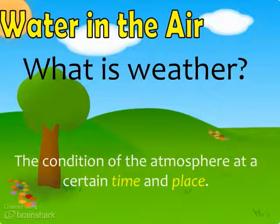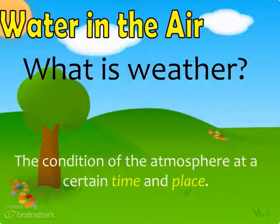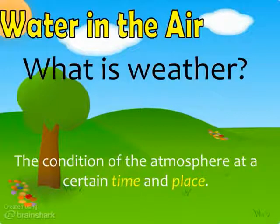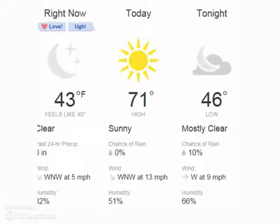What is weather? The definition we're going to use says that weather is the condition of the atmosphere at a certain time and place. Time and place are italicized because when we're talking about weather, we are indicating that it really all depends on the time of day and the place that you're talking about, which tells us that weather changes constantly.